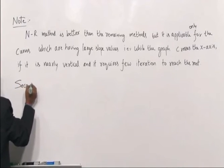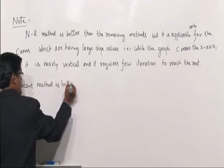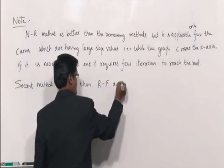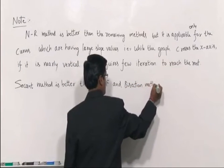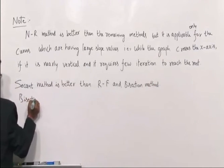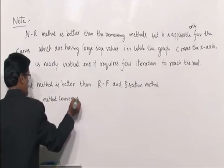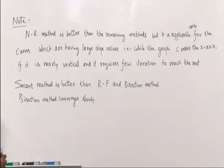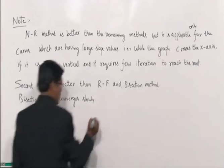Next, the secant method is better than Regula Falsi and the midpoint method, that is the bisection method. Bisection method converges slowly. These are the note points. Next, I am giving the method followed by the order of convergence.